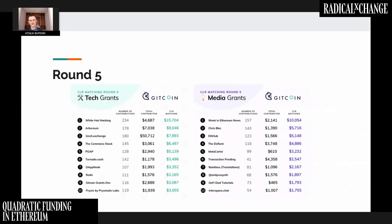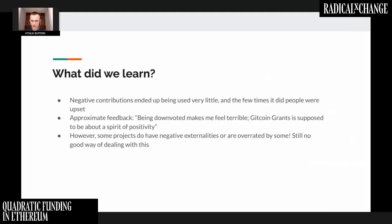Round five kept the tech and media format and did introduce negative contributions, but we saw a negative result: negative contributions ended up being used very little — maybe about 10 of them versus thousands of positive contributions. The few times it did happen, people were very upset. Summarizing a lot of feedback into one sentence: 'Being downvoted makes me feel terrible — Gitcoin Grants is supposed to be about a spirit of positivity; giving people the ability to basically rip money out of each other's pockets really ruins that mechanic.' So it ended up not being very effective.